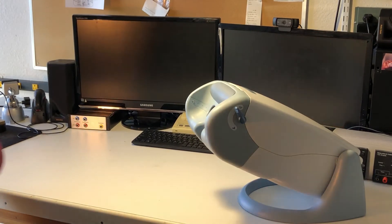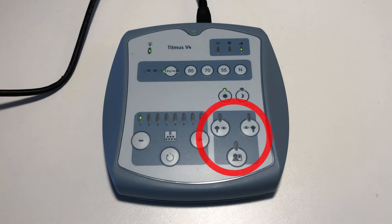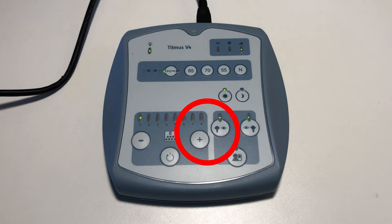Have the patient look into the vision screener. You will know they are in the correct position when the lights on the bottom right of the control panel light up. Note the light on the left indicating that the vision screener is displaying slide number one.